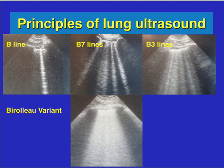Remember, the more B lines there are, the more of a problem. One B line doesn't mean anything. If you have two to three B lines, five to six B lines, or a full white B line pattern — the full complex — then it could mean something clinically significant.